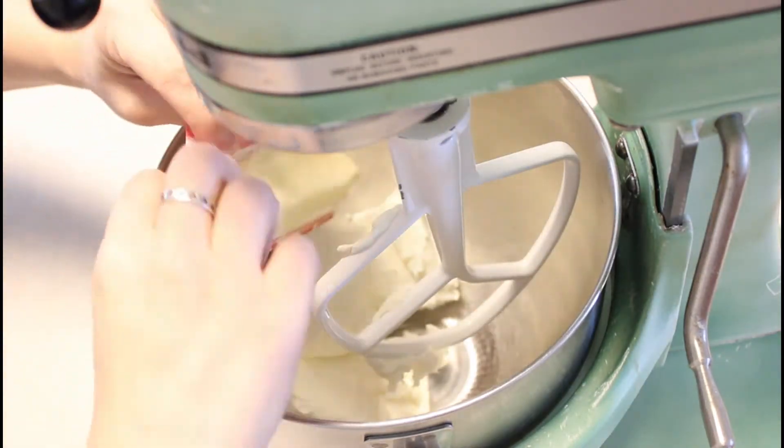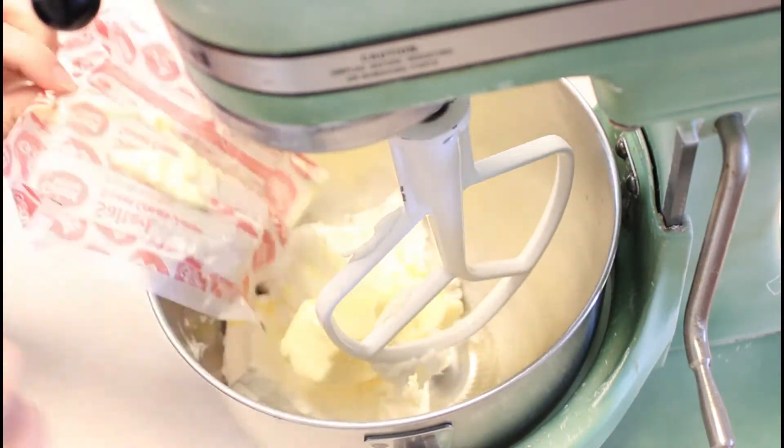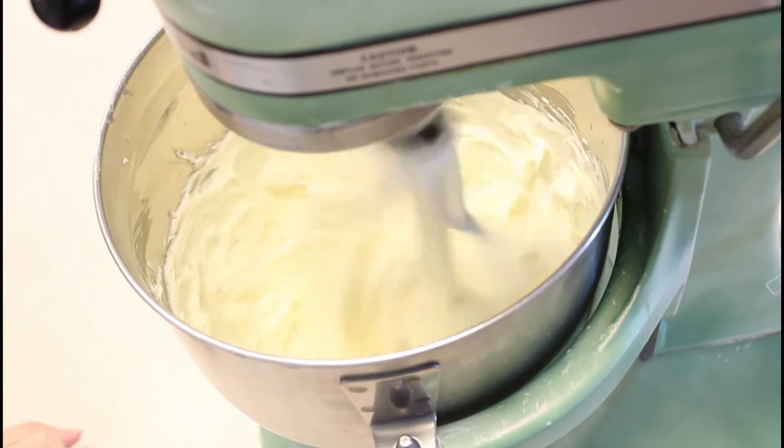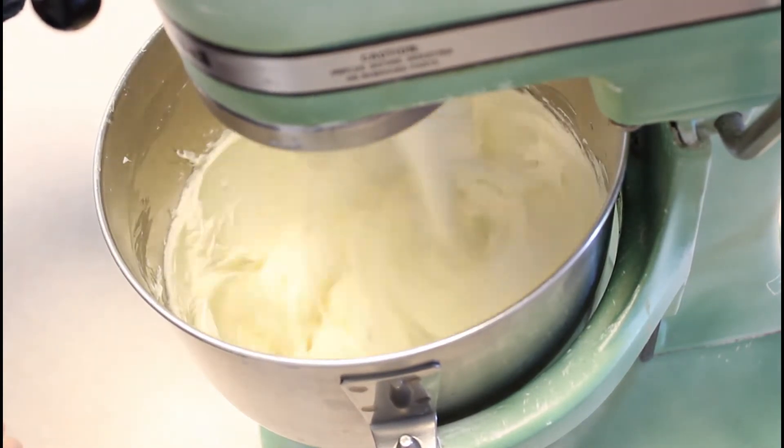For the rainbow cream cheese frosting, you need 2 8-ounce packs of softened cream cheese, 1 stick of salted butter softened, and 2 cups of granulated sugar.